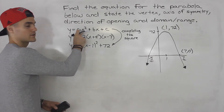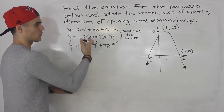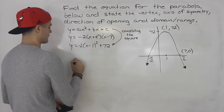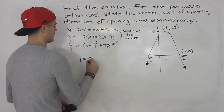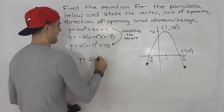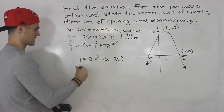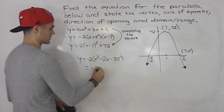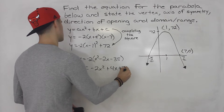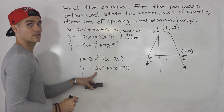If we want the standard form, we can take either equation and expand it — they'll both give the same answer since they're the same quadratic. Let's expand the factored form: negative 2 times (x plus 5)(x minus 7) gives x squared minus 2x minus 35. Then distributing the negative 2 gives negative 2x squared plus 4x plus 70. That is the standard form.